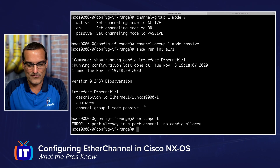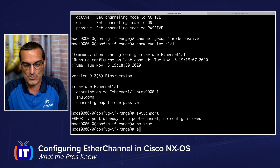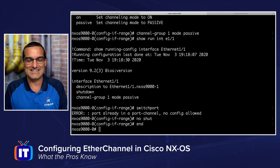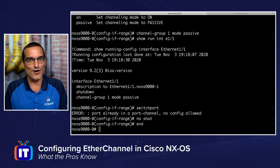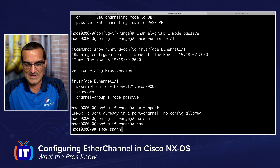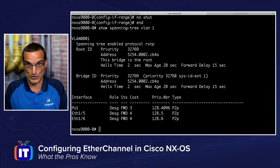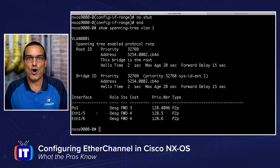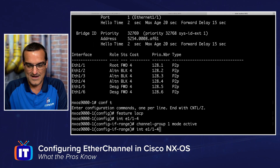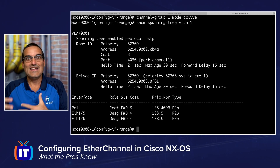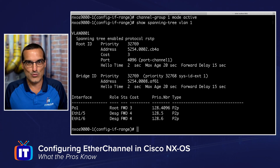The only thing left is to slide back to the original device, no-shut those four interfaces, and then do our verifications. The first verification: let's do 'show spanning-tree' for VLAN 1 again. Holy port channel, Batman — there is now just one link representing all four of those links, and it's forwarding. And if we run 'show spanning-tree VLAN 1' on the other device, we see that one forwarding link between these two devices.